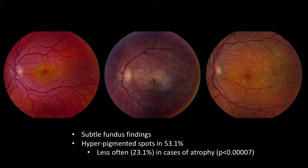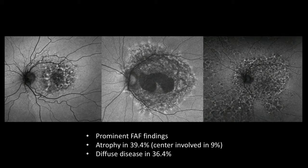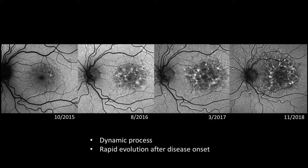The hyperpigmented spots we see in the macula are a pretty classic early finding, but later in the disease course it appears to give way to atrophy of the RPE. Fundus autofluorescence imaging may be the best way of identifying this condition. In most cases, patients have an area of fairly well-circumscribed disease in the posterior pole, although in about a third of cases it's extended to the retinal periphery. Atrophy of the RPE was present in about 40% of eyes and was center-involving in about 10%. This case in particular was interesting because we feel like we caught this disease at its onset. The image on the left shows very early disease in October 2015. The second image, just 10 months later, shows the disease spreading to involve the rest of the macula quite rapidly.